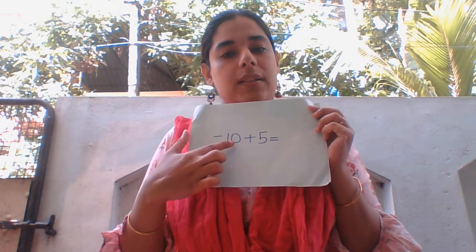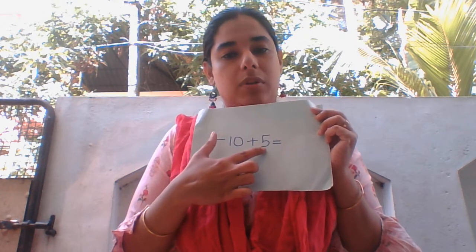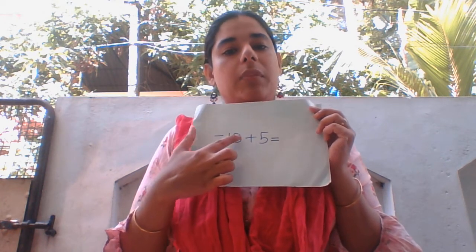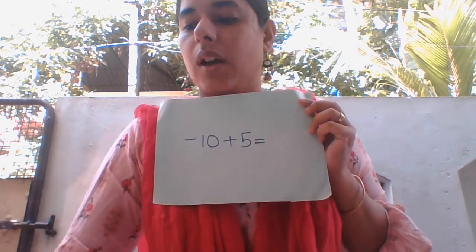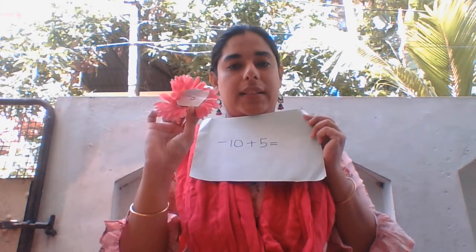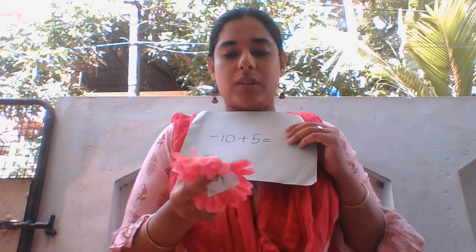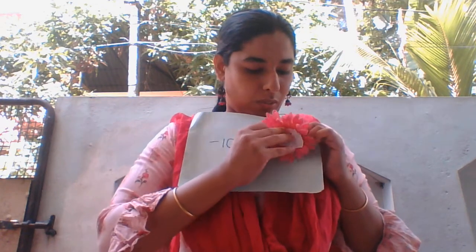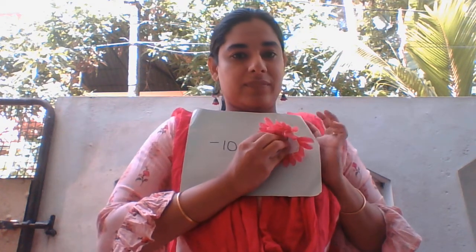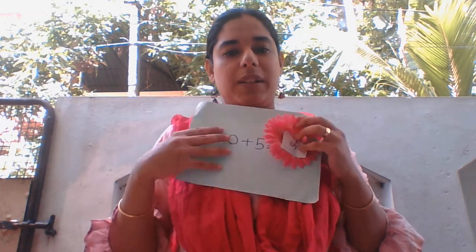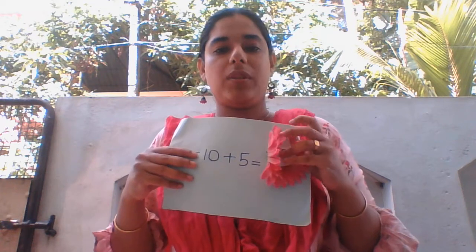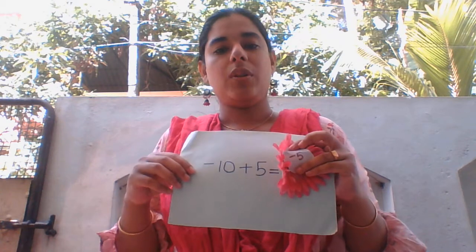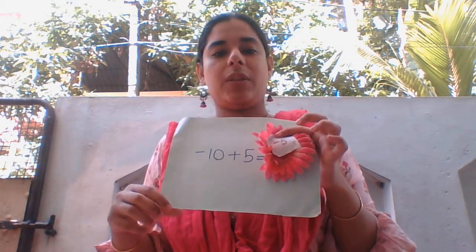Both have different signs, so greatest number minus smallest number, then put the sign of the greatest number. So 10 minus 5 is 5 — negative 5 is the answer. You have to search from the flowers where the answer negative 5 comes. There is a stem on the flower — press a hole, just press it, so it will become like this. Negative 5 — you can arrange the flower like this.